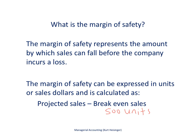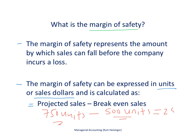One last concept is the margin of safety, which represents the amount by which sales can fall before the company incurs a loss. It can be expressed in units or sales dollars. The formula is projected sales minus breakeven sales. For Snowboard Company, breakeven sales are 500 units; if projected sales are 750 units, then the margin of safety is 250 units. That means sales can fall by 250 units, from 750 down to 500, before the company starts incurring losses.